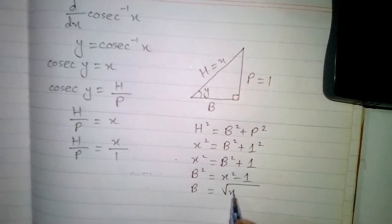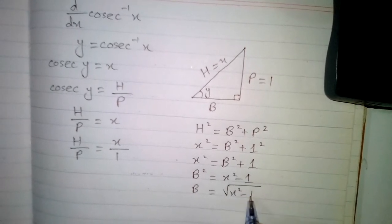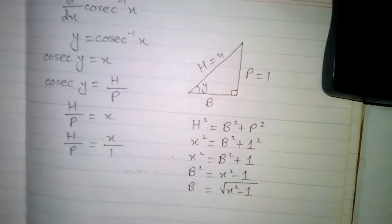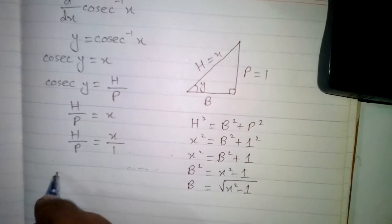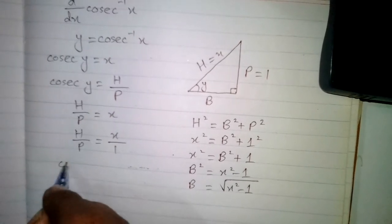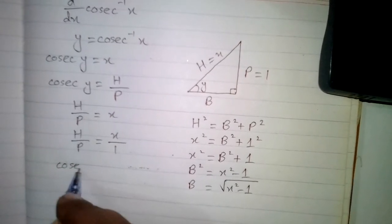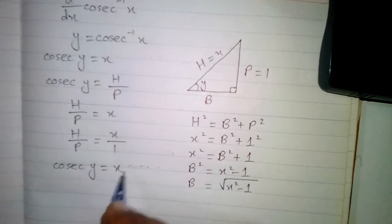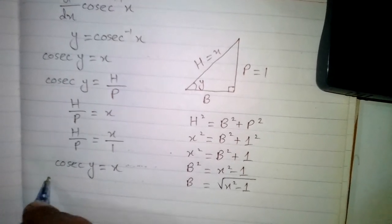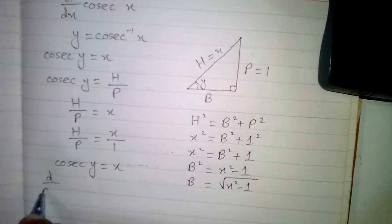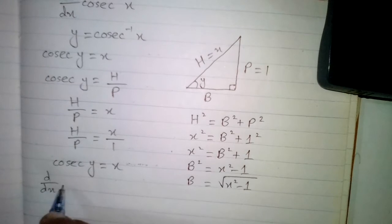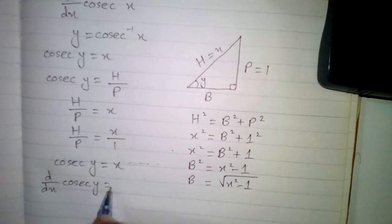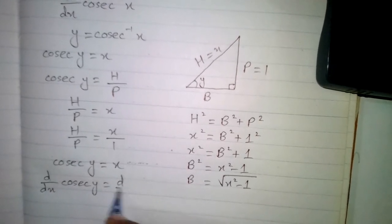Now we take the derivative of cosec y equals x with respect to x, so we have d by dx of cosec y equals d by dx of x.